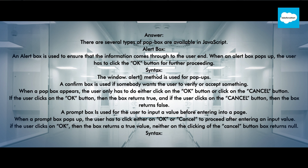A confirm box is used if somebody wants the user to verify or accept something. When a confirm box appears, the user has to either click the OK button or the Cancel button. If the user clicks OK, the box returns true, and if the user clicks Cancel, the box returns false.